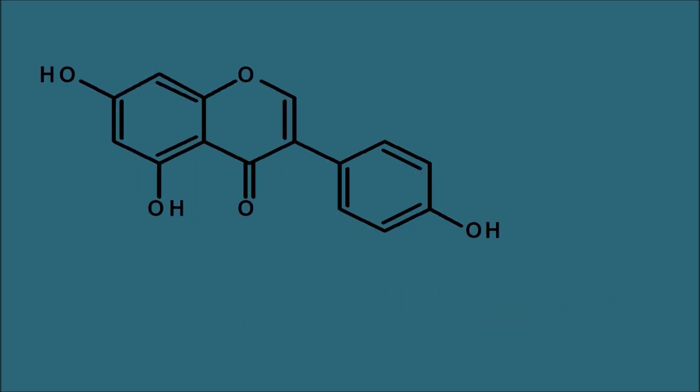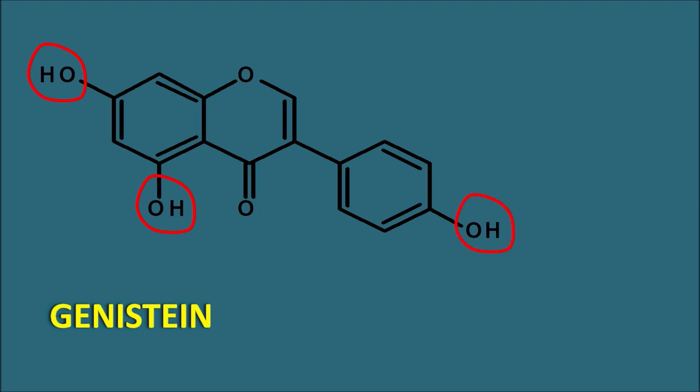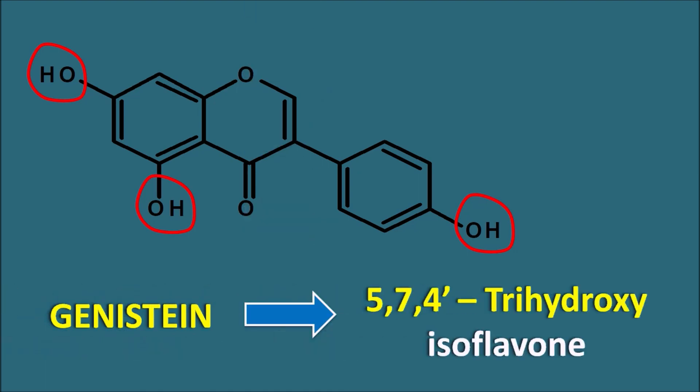Genistein has an extra OH group compared to daidzein. It has OH groups at the 5 and 7 positions on the main ring and at the 4' position of the phenyl ring, making it 5,7,4'-trihydroxy isoflavone. These are the two isoflavones: daidzein and genistein.